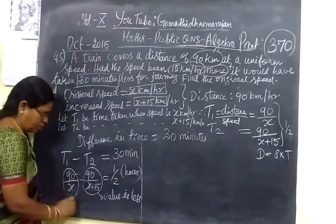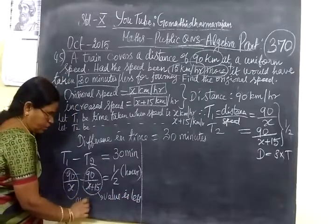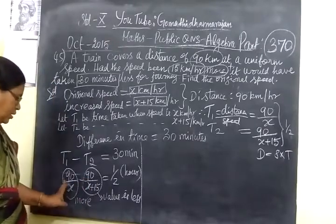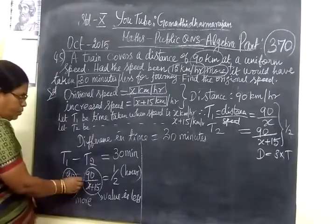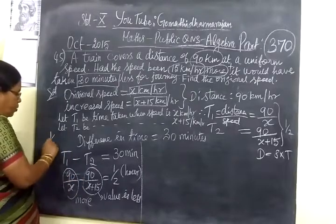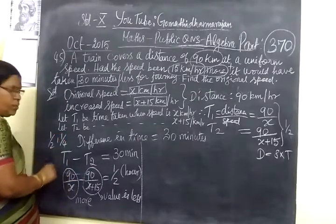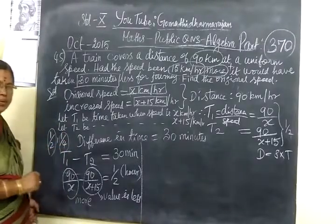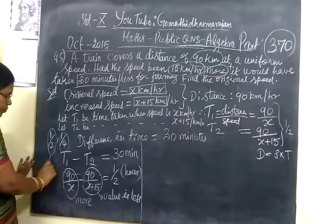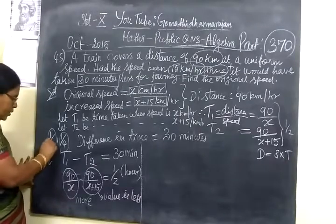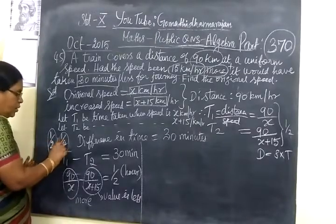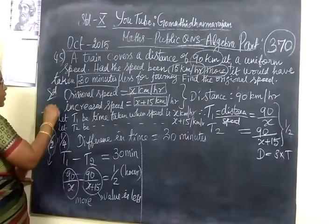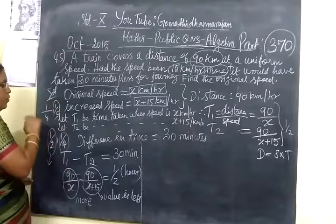Students may confuse which is the first value and which is the second value. But you see, this is 1 by 2, 1 by 4. Which has more value? Half has more value. When the denominator increases, the whole value is decreasing.